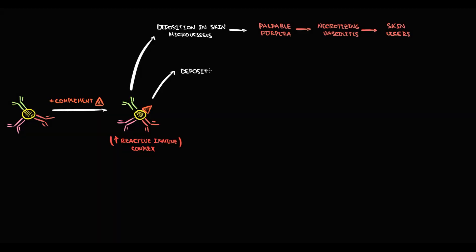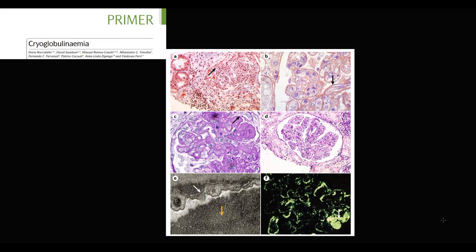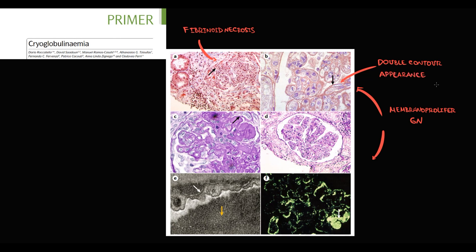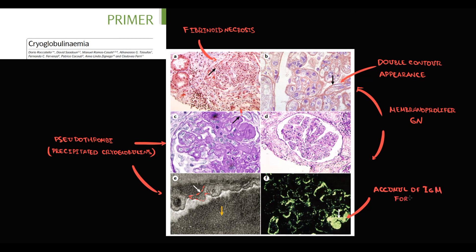Immune complexes can also deposit in kidney glomeruli, potentially causing glomerulonephritis. The first image shows fibrinoid necrosis from immune complex deposition. The next two images show membranoproliferative glomerulonephritis with its specific double-contour appearance. Precipitated cryoglobulins can cause formation of pseudothrombi, and the last image shows massive IgM accumulation resulting in thrombus formation.